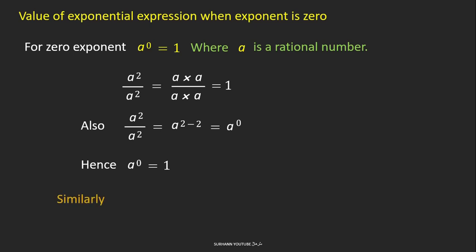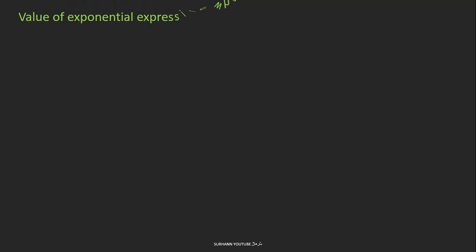Similarly, any digit that has a 0 power is always equal to 1. Any fraction that has a 0 power value is also equal to 1. So a 0 power always means its value is equal to 1.